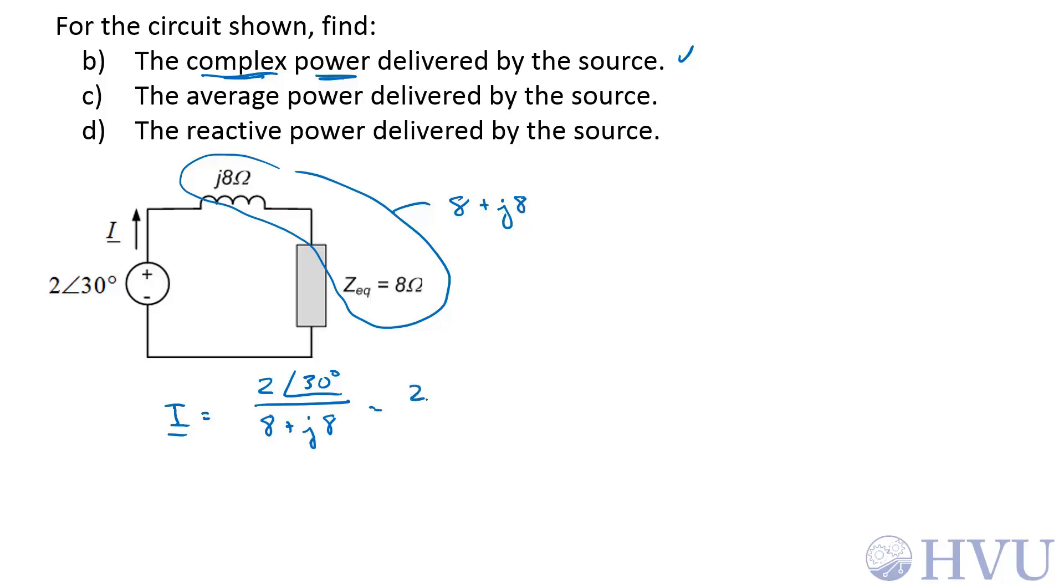So that's 2 at an angle of 30 degrees, over 8 square root 2 at an angle of 45 degrees. 2 over root 2 is just root 2, over 8 at an angle of 30 minus 45 degrees is minus 15 degrees.